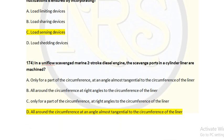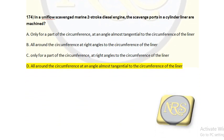Question number 174. In a uniflow-scavenged marine two-stroke diesel engine, the scavenge ports in the cylinder liner are machined: option A, only for a part of the circumference, at an angle almost tangential to the circumference of the liner; option B, all around the circumference, at right angles to the circumference of the liner; option C, only for a part of the circumference, at right angles to the circumference of the liner; option D, all around the circumference, at an angle almost tangential to the circumference of the liner. In a uniflow engine, the scavenge ports are at the bottom and the exhaust valve is at the top; air comes from the scavenge space through the ports at the bottom and exits through the exhaust. For question number 174, option D is the correct answer.